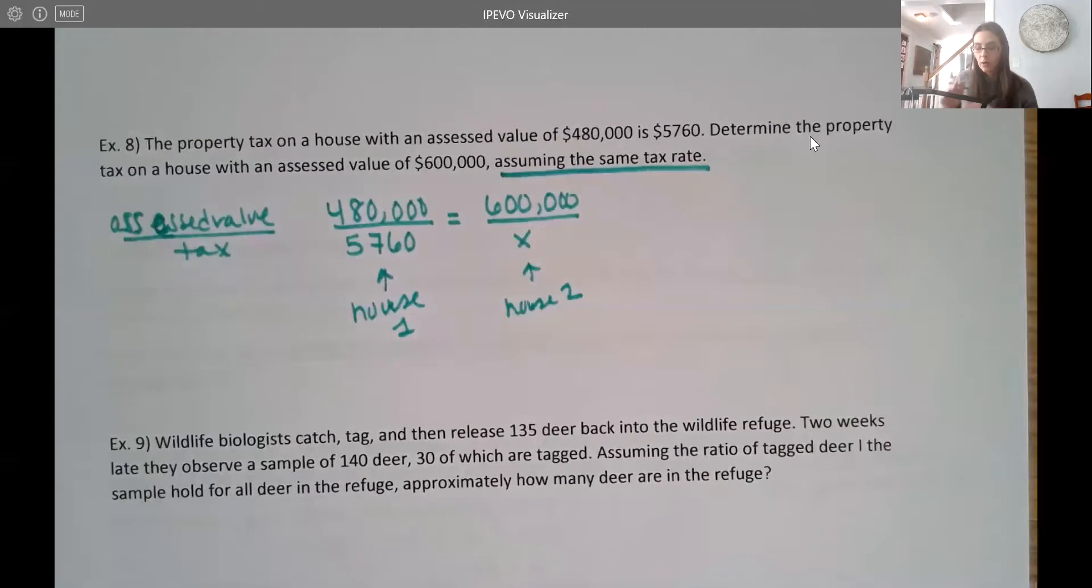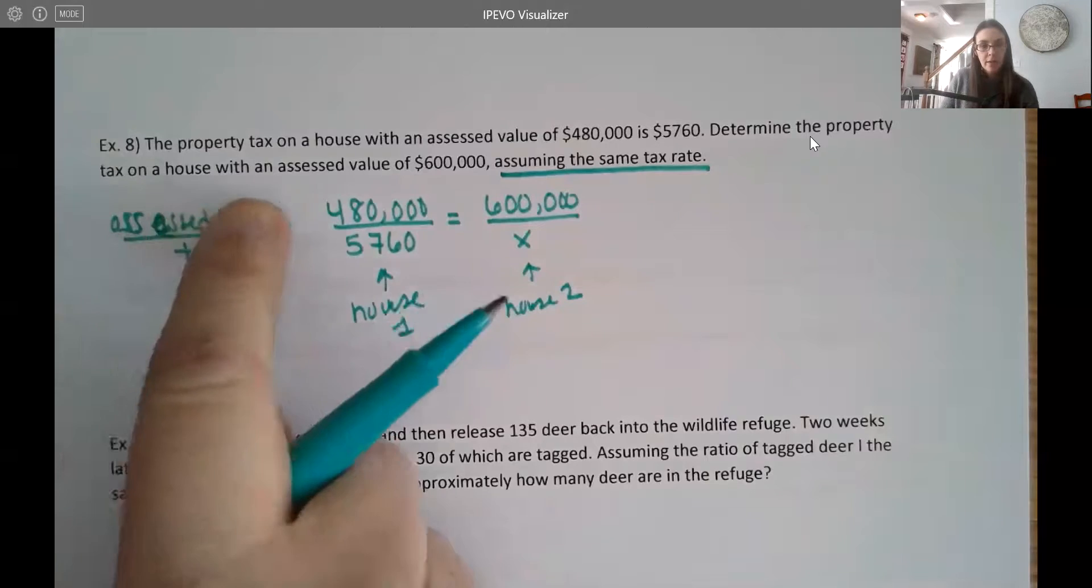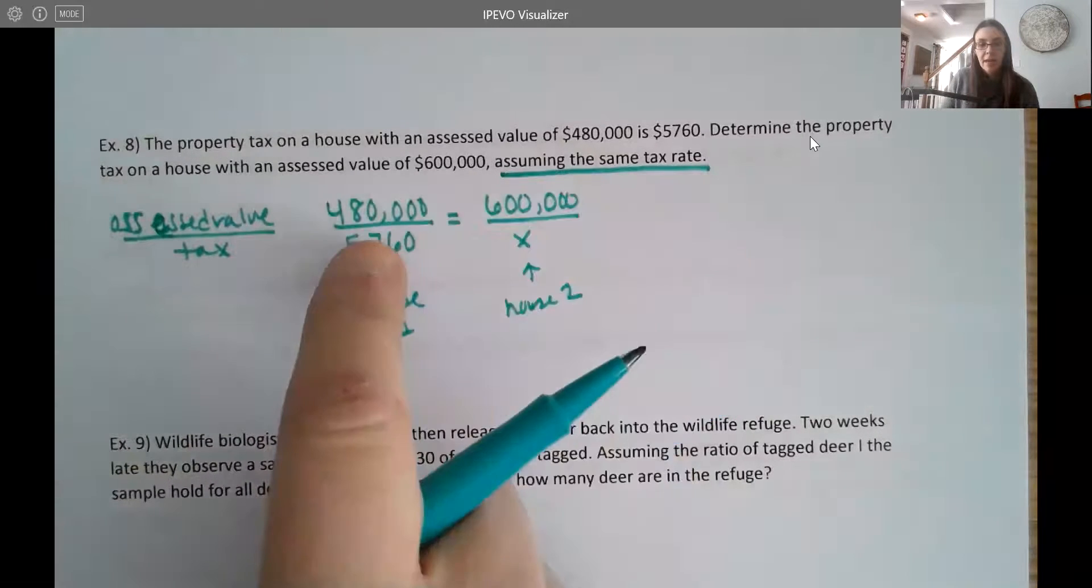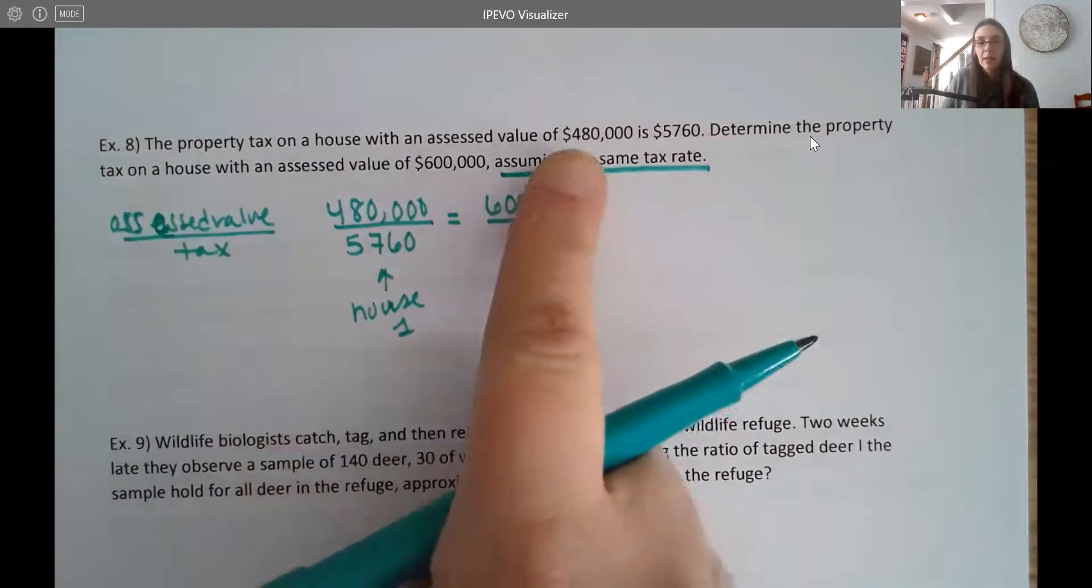So again, we're just saying in order. So I have my values the same. Both the assessed values are on top. Taxes are on bottom. Here's my house one. Here's my house two.